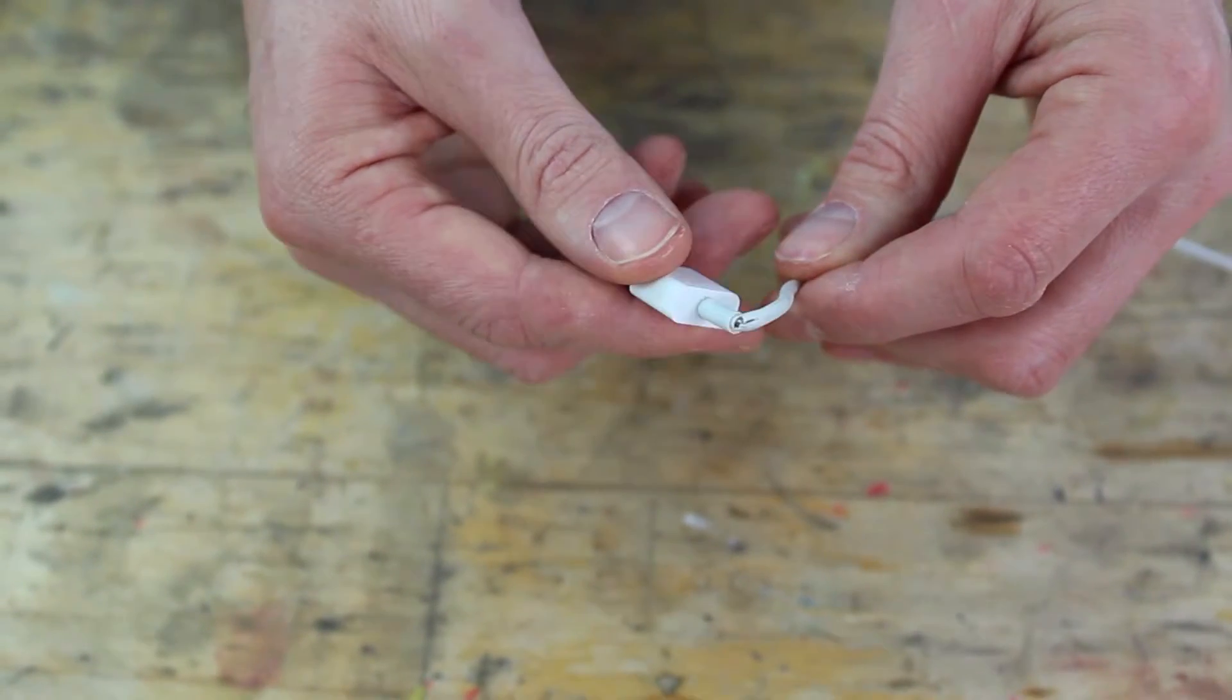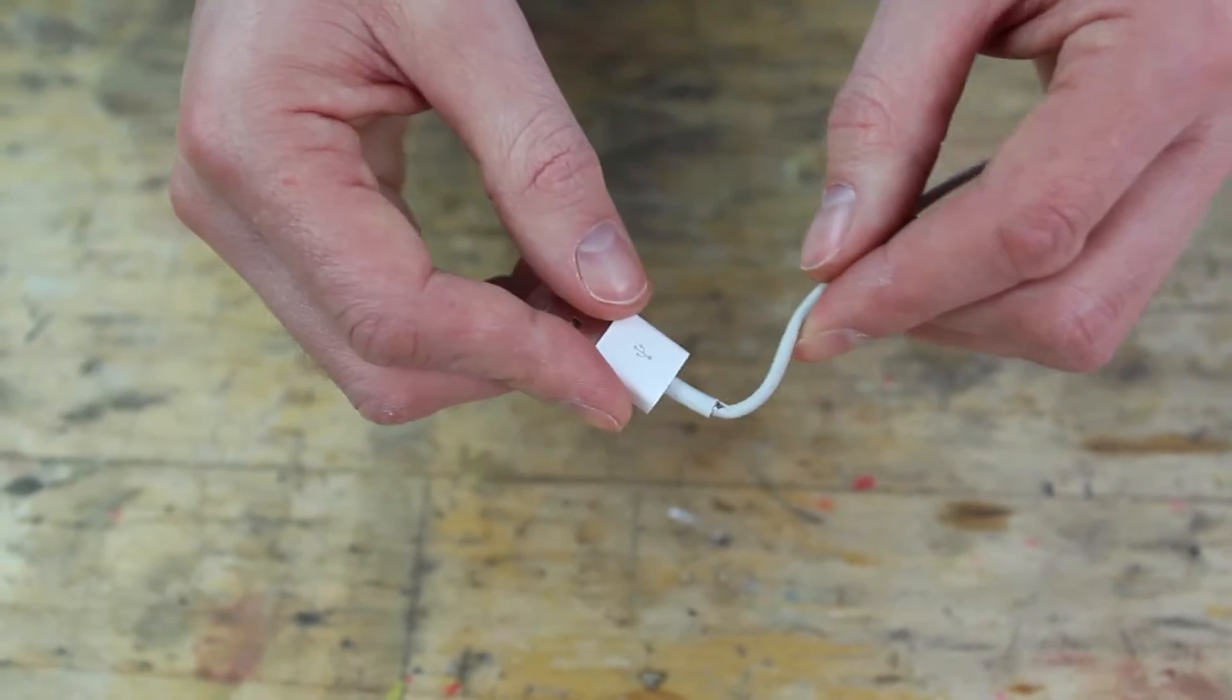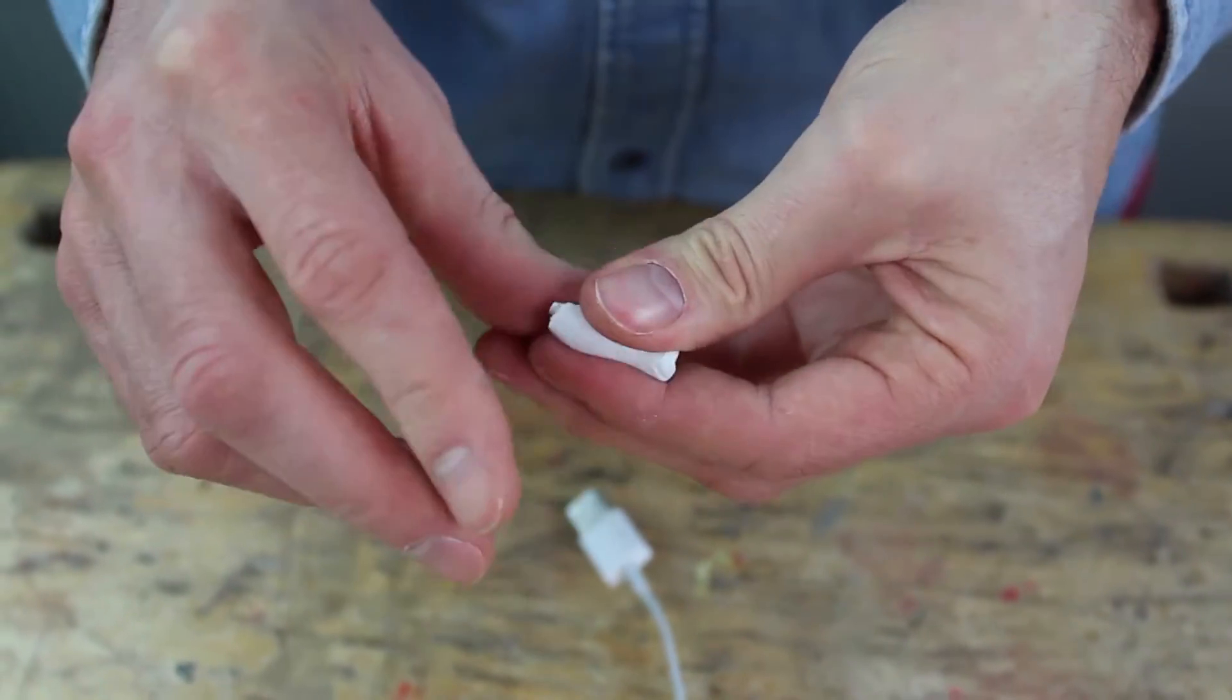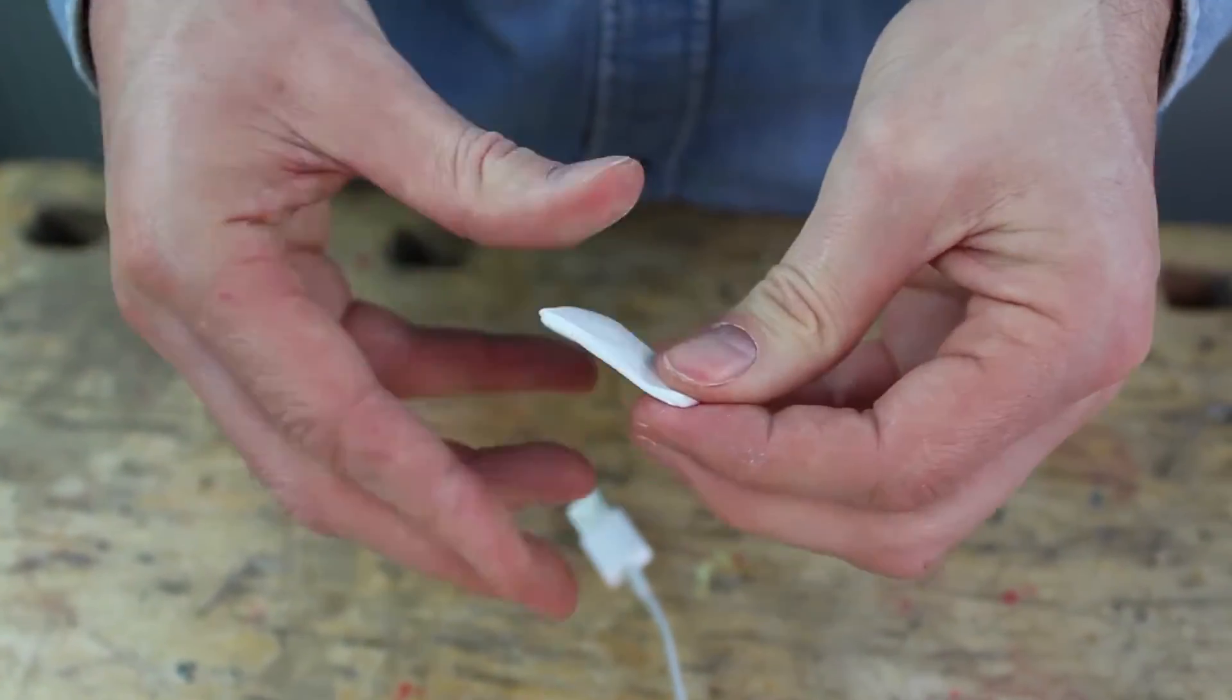If you want to completely wrap Sugru around something, like a frayed cable, there is another technique. Start by making your Sugru into a flat sausage the length of the area you wish to cover.